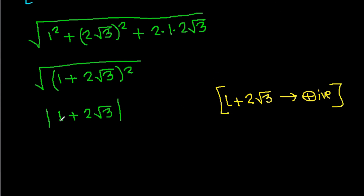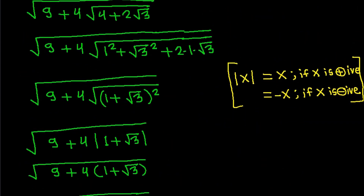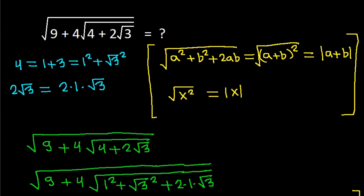Since 1 plus 2 times √3 is positive, mod(1 + 2√3) equals 1 + 2√3. So the final answer is 1 plus 2 times √3.